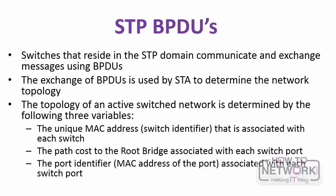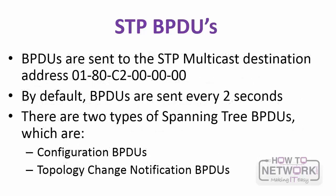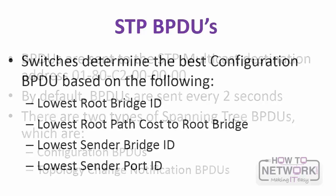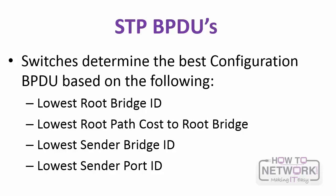The topology of an active switch network is determined by three variables: the unique MAC address or switch identifier associated with each switch, the path cost to the root bridge associated with each port on the switch, and the port identifier. BPDUs are sent to the STP multicast destination address and by default are sent every two seconds. There are two types of BPDUs: configuration BPDUs and TCNs — topology change notification BPDUs. Switches determine the best configuration BPDU based on lowest root bridge ID, root path cost to the root bridge, sender bridge ID, and sender port ID.